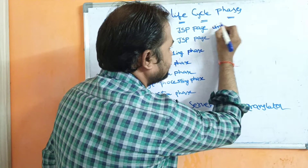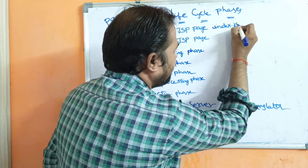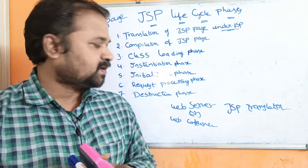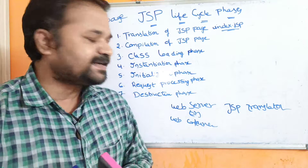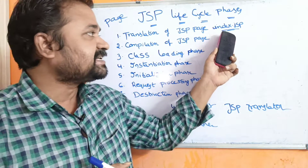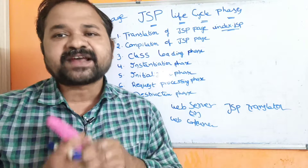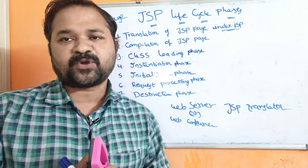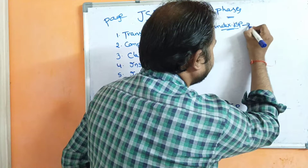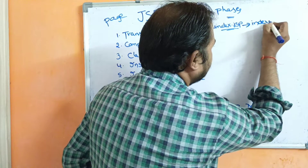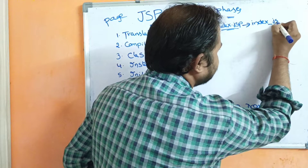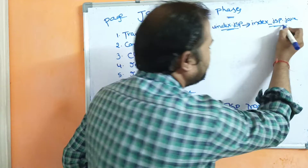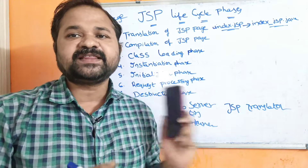For example, if the name of the file is Index.jsp and it contains some code, the JSP Translator takes the responsibility of translating that JSP page into a Servlet page. A Servlet is nothing but a normal Java program. So Index.jsp is translated into Index_JSP.java, which is the Servlet created by the JSP Translator.